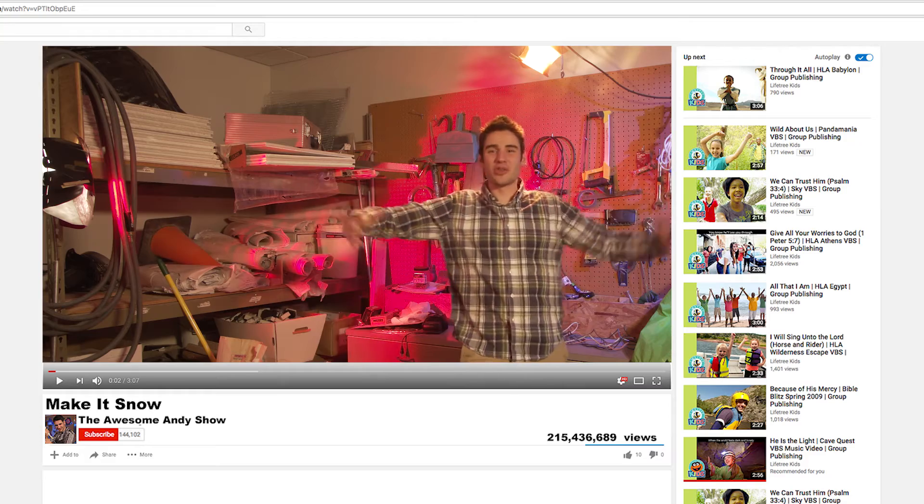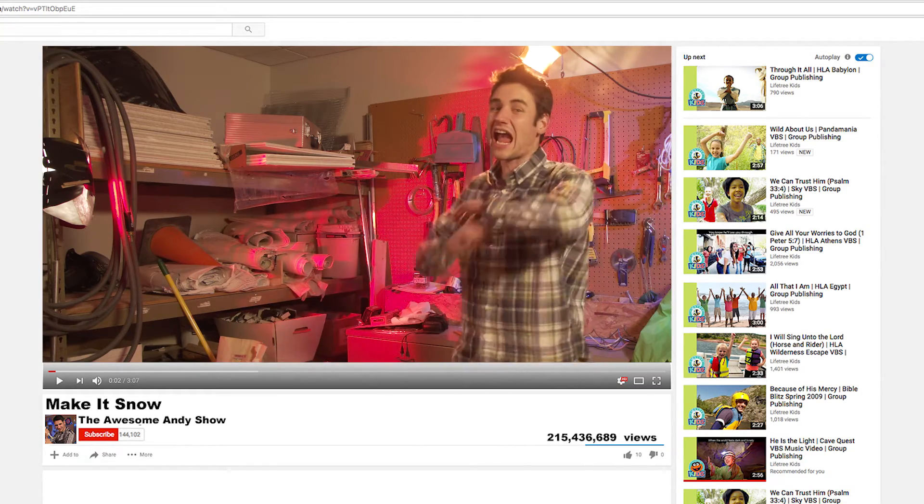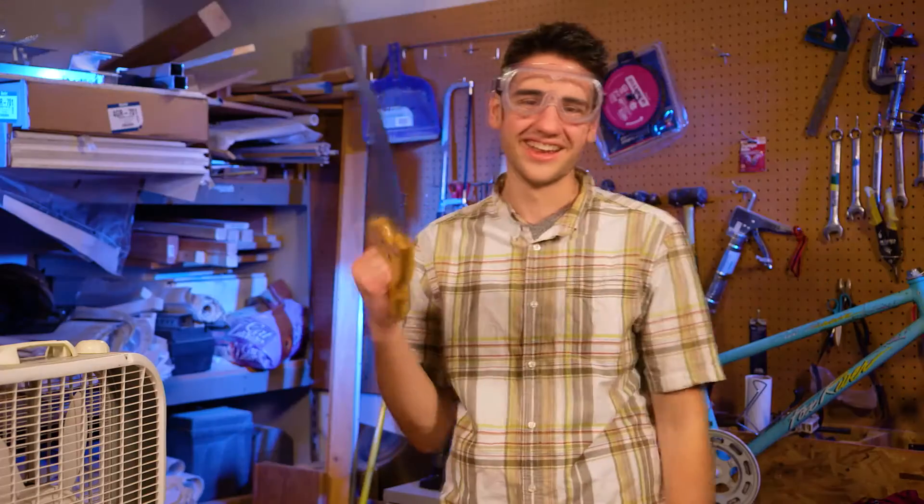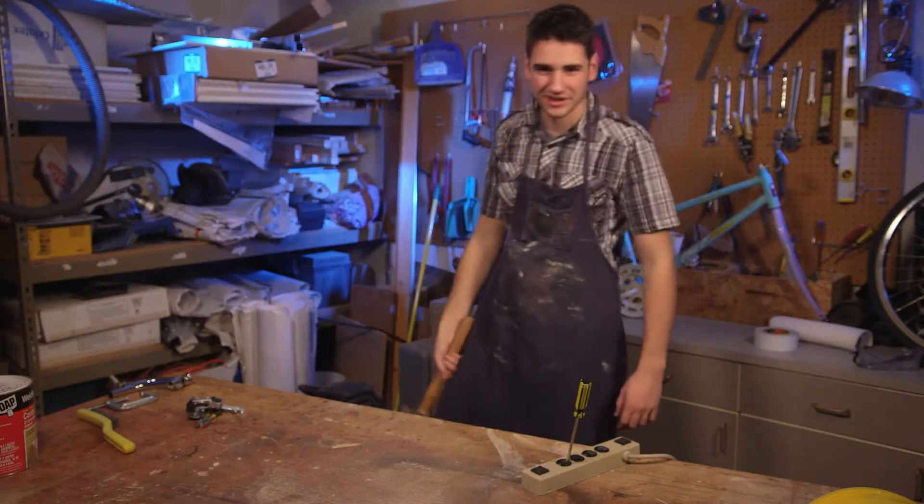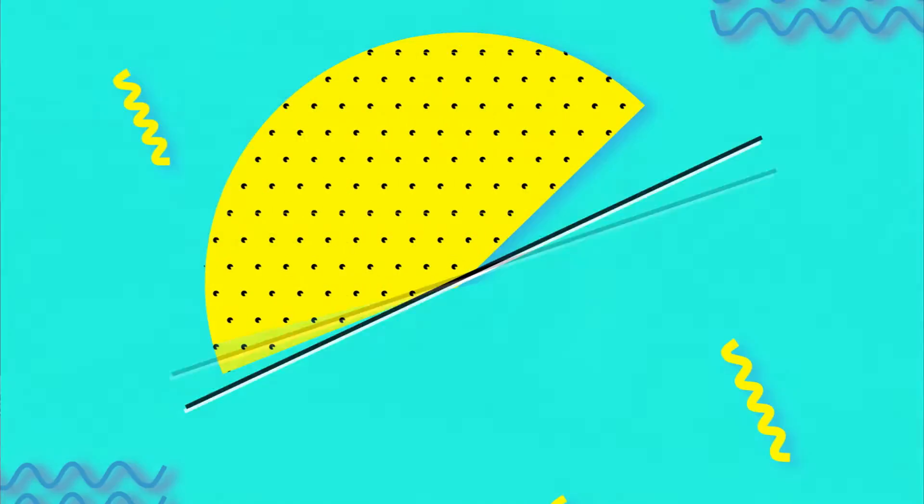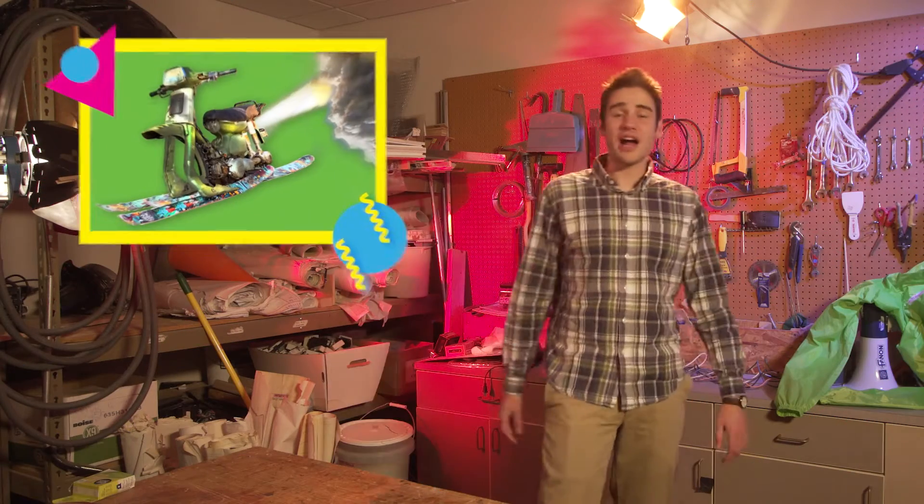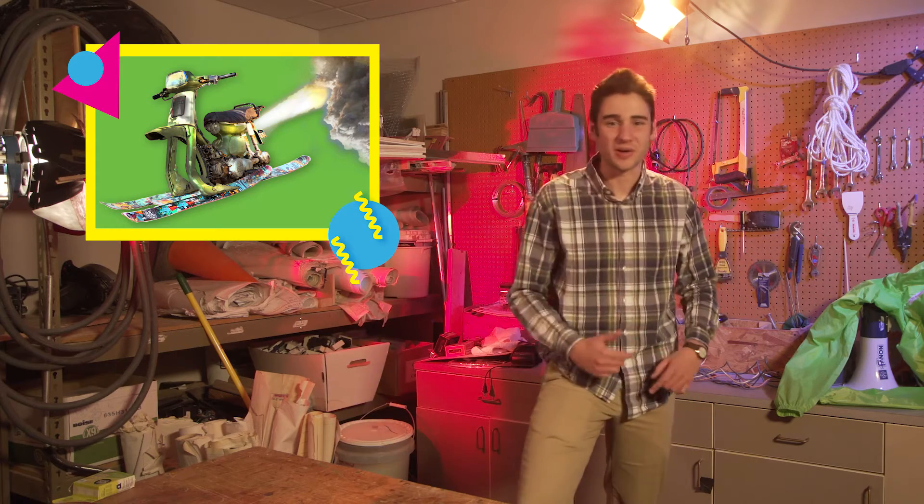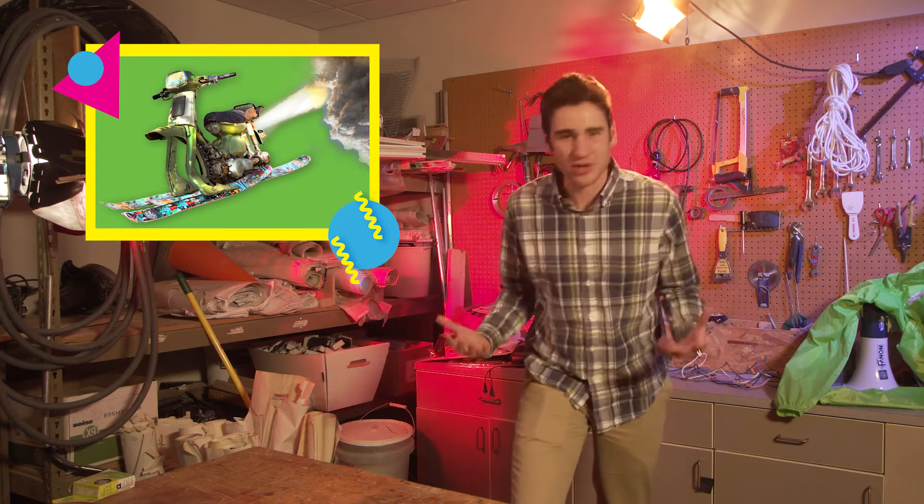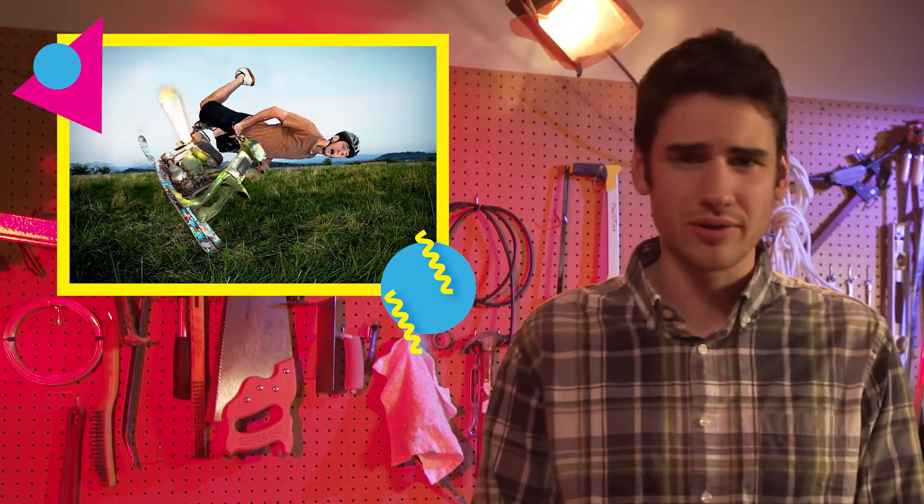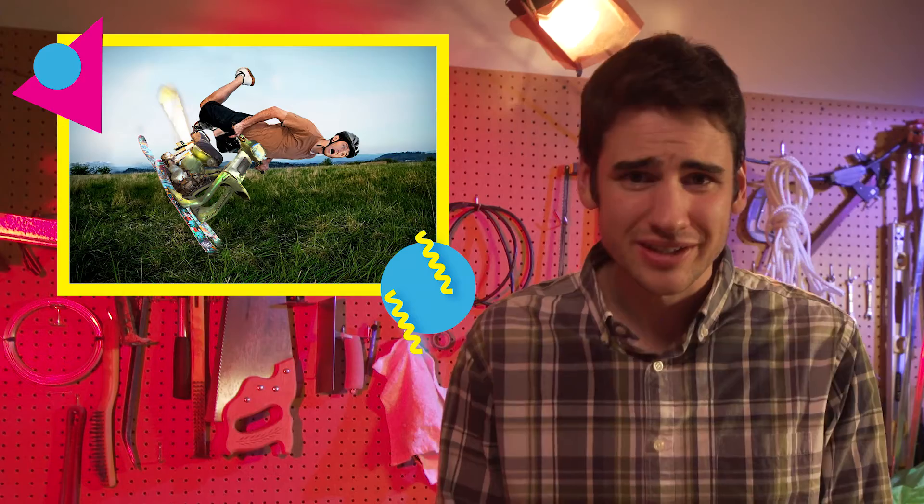Welcome to the Awesome Andy Show, the internet show where we dare to build bigger and better than any other internet show. A lot of you watched last summer when I built the rocket-powered tri-ski scooter. Well, as we learned, the rocket-powered tri-ski scooter doesn't really work without a lot of snow. Well, for all of you who may have built my rocket-powered tri-ski scooter last summer, I had no idea that the rocket-powered tri-ski scooter was more of a rocket-powered catapult when not used on snow. Well, today I'm going to do something about that.